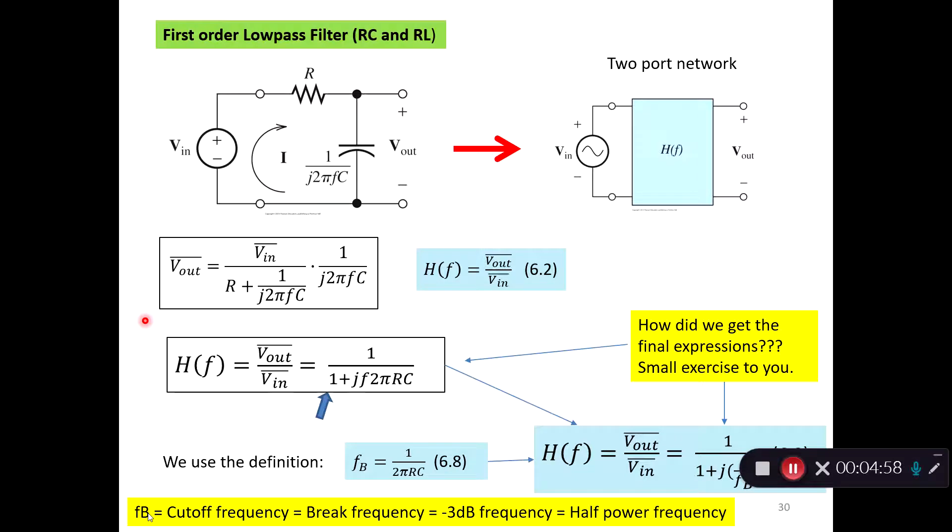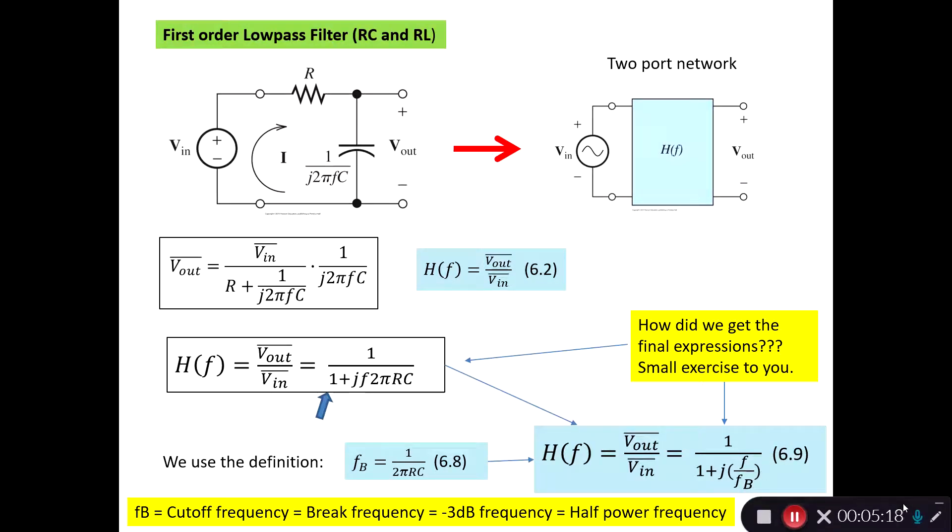The next is to write the transfer function Vout over Vin. We know that Vout looks like this and we have Vin up here, so we can take Vin and put it to the other side. Then we have to beautify the equation a bit so that it looks like this one: 1 plus j something. We're interested in getting 1 plus j something down here in the denominator. We have to reduce the equation a bit in order to beautify it to get it here. I leave that as a small exercise to you.